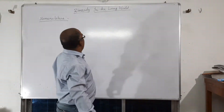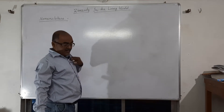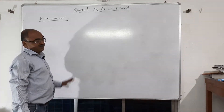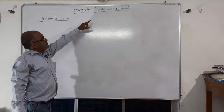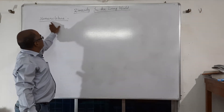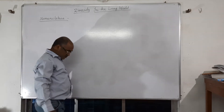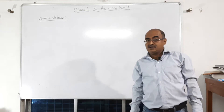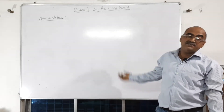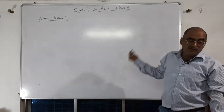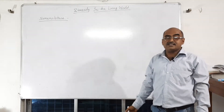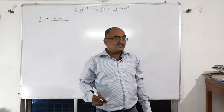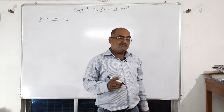Let us start today about the diversity in the living world. Whenever we are thinking about diversity in the living world, we have to think about nomenclature. In case of nomenclature, that means naming of a particular living thing, we have to think because whenever we are going to different places of the earth or even in India, different places have different names for one organism.